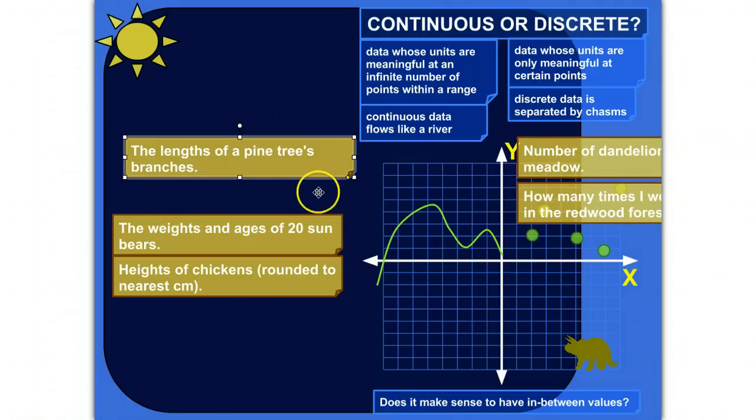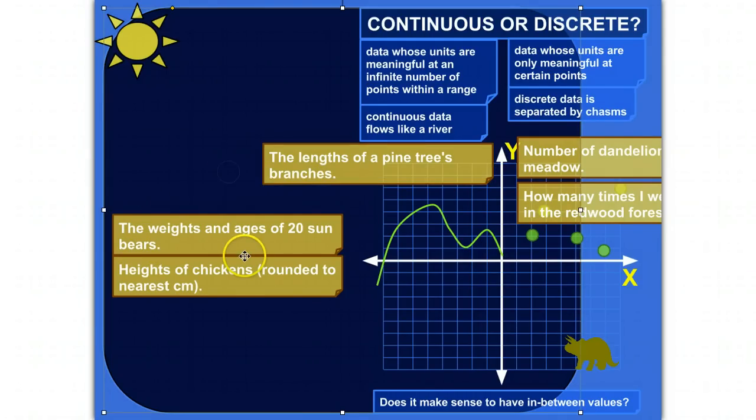So there's an infinite number of values within a reasonable range that would make sense for the length of pine trees. I mean, it wouldn't be reasonable to say that a branch could be a million feet long. So it's not like any value would work. But within the reasonable range, between 1 and, I don't know, 20 feet, there could be an infinite number of values in between the whole numbers. So that would be an example of continuous data.